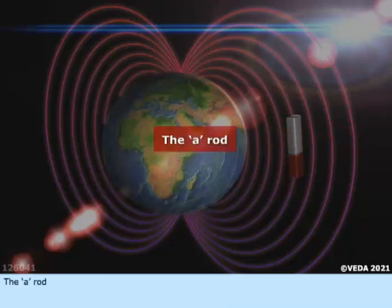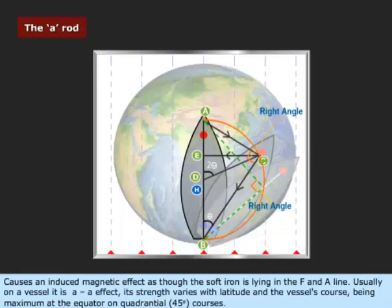The A rod causes an induced magnetic effect as though the soft iron is lying in the F and A line. Usually on a vessel, it is an A effect. Its strength varies with latitude and the vessel's course, being maximum at the equator on quadrantal 45 degree courses.